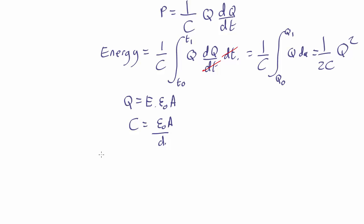So substitute those both in and we find that the energy equals 1 over 2 D over epsilon naught A times E epsilon naught A squared. Just substituting these into that equation over there.